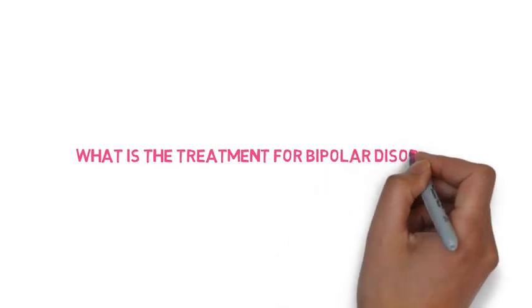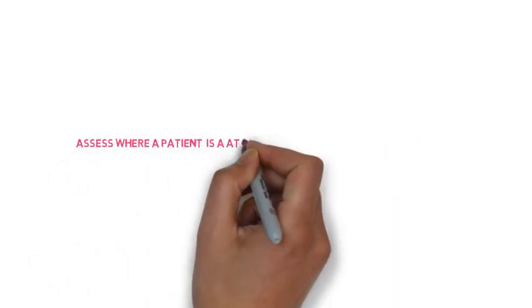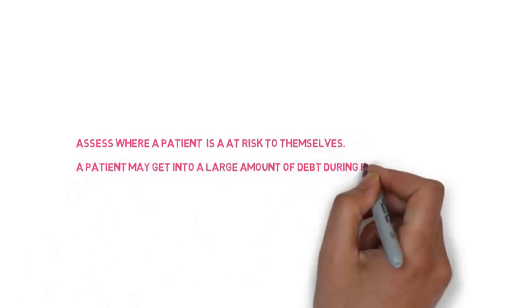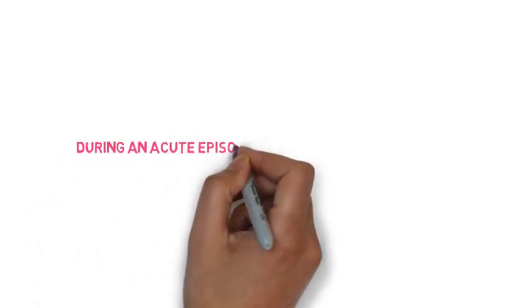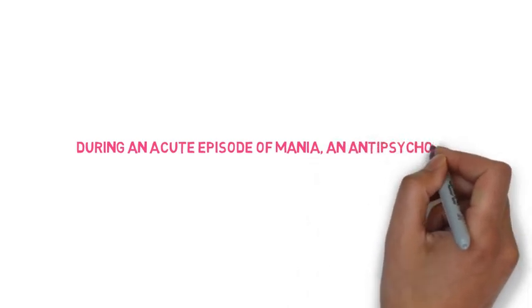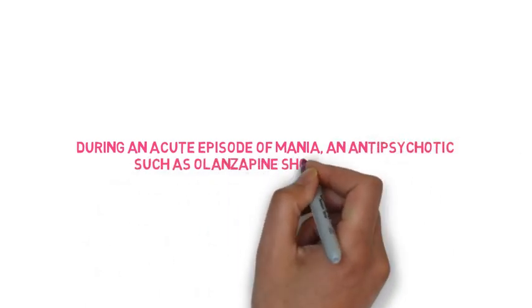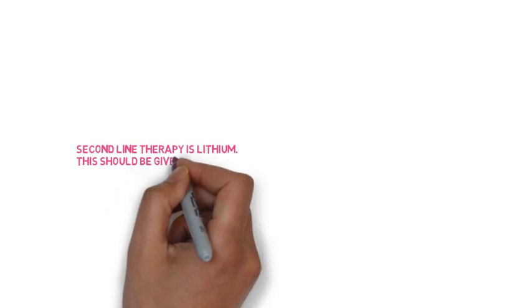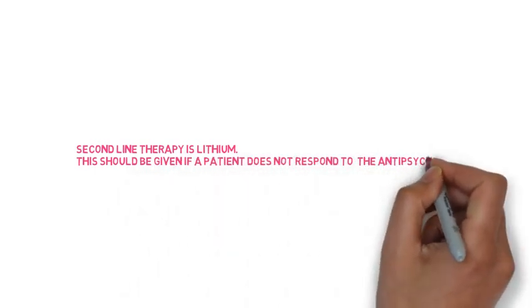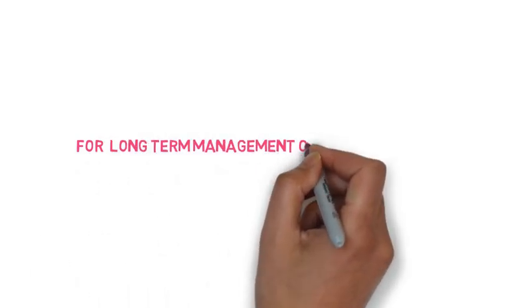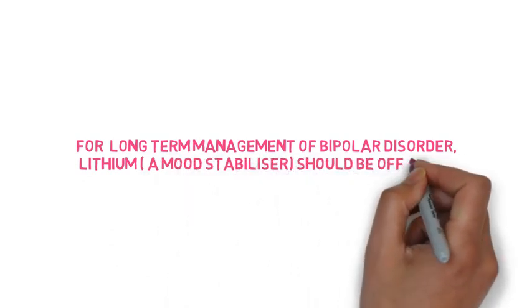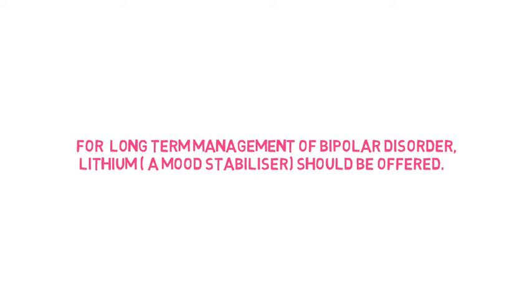What is the treatment? You should assess the patient fully to see if they are at risk to themselves. A patient may get into a large amount of debt during episodes of mania. During acute episodes of mania, an antipsychotic such as olanzapine should be given. Second-line therapy is lithium, which should be given if a patient does not respond to the antipsychotic. For long-term management of bipolar disorder, lithium, a mood stabiliser, should be offered. Please check out my video on lithium to learn more about this important drug.